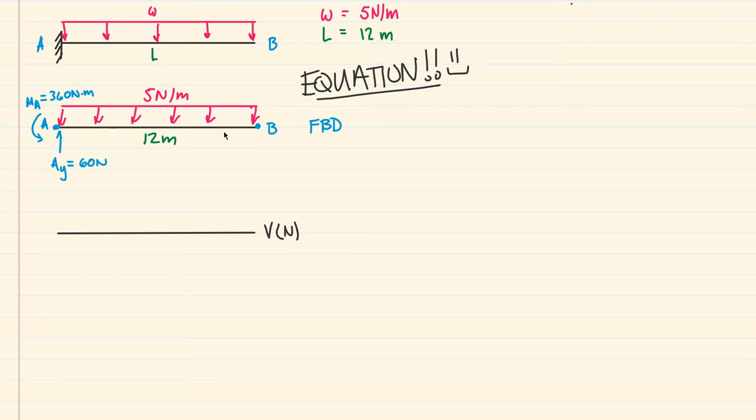We can take a cut anywhere in this span, just some random distance, and draw that portion of the beam. Here is point A, here is our 60 newtons, then we have our MA which is 360 newton-meters, then we have our distributed load that goes all the way across to that cut. Here at our cut, which is located a distance x from A,